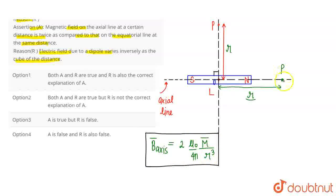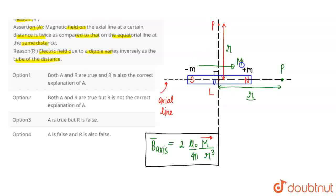An important point: the direction of the magnetic field on the axis is the same as the direction of the magnetic moment. The magnetic moment direction goes from negative pole (−M) to positive pole (+M), just like in an electric dipole where the dipole moment goes from minus q to plus q. Similarly, for a magnetic dipole moment the direction is from negative to positive, so the magnetic field at point P on the axis is in the same direction as the magnetic dipole moment.